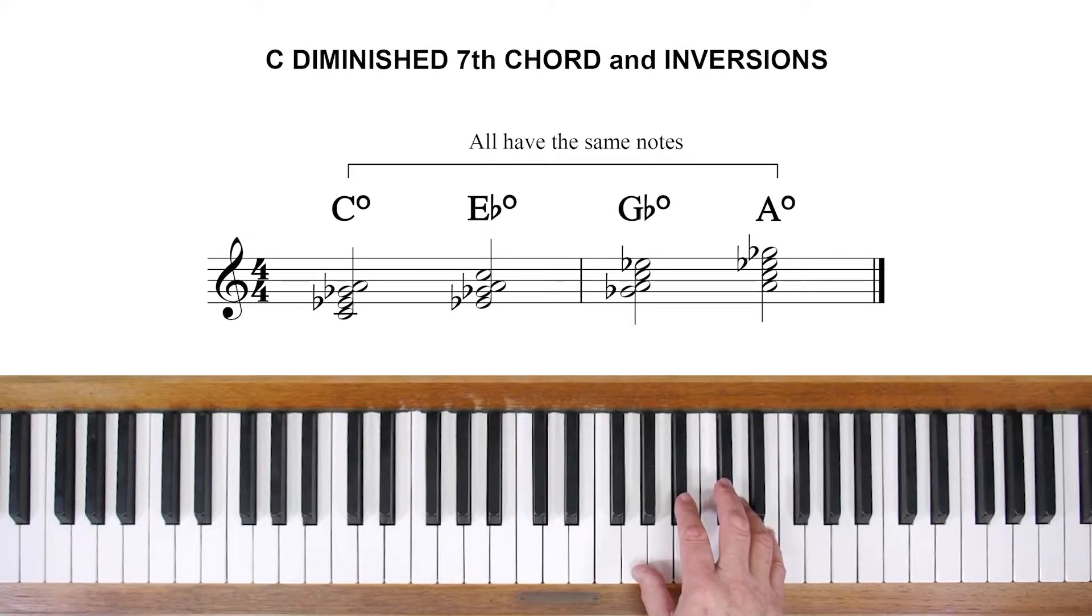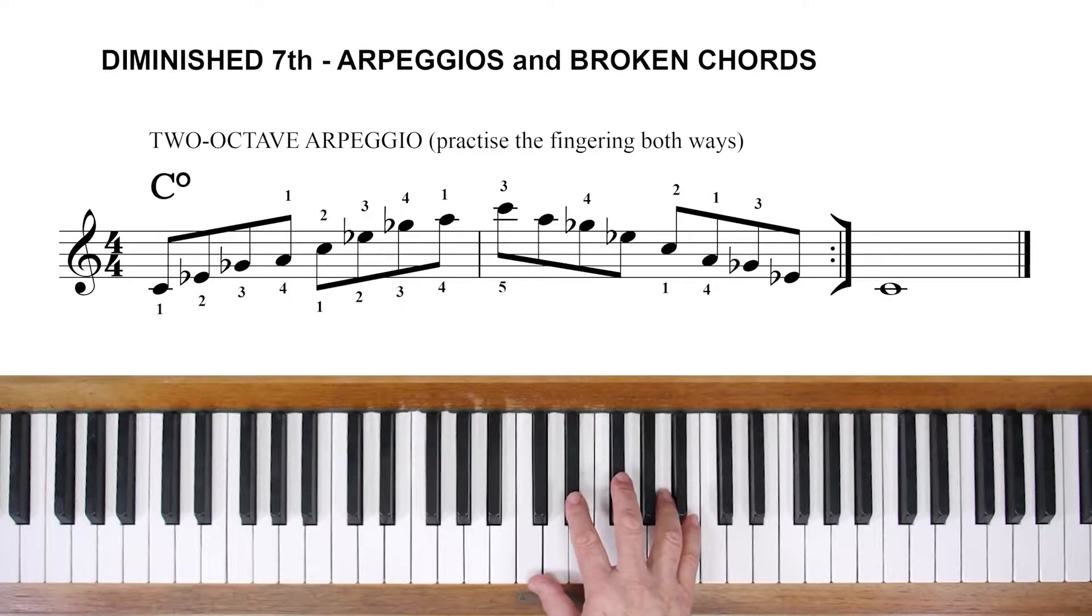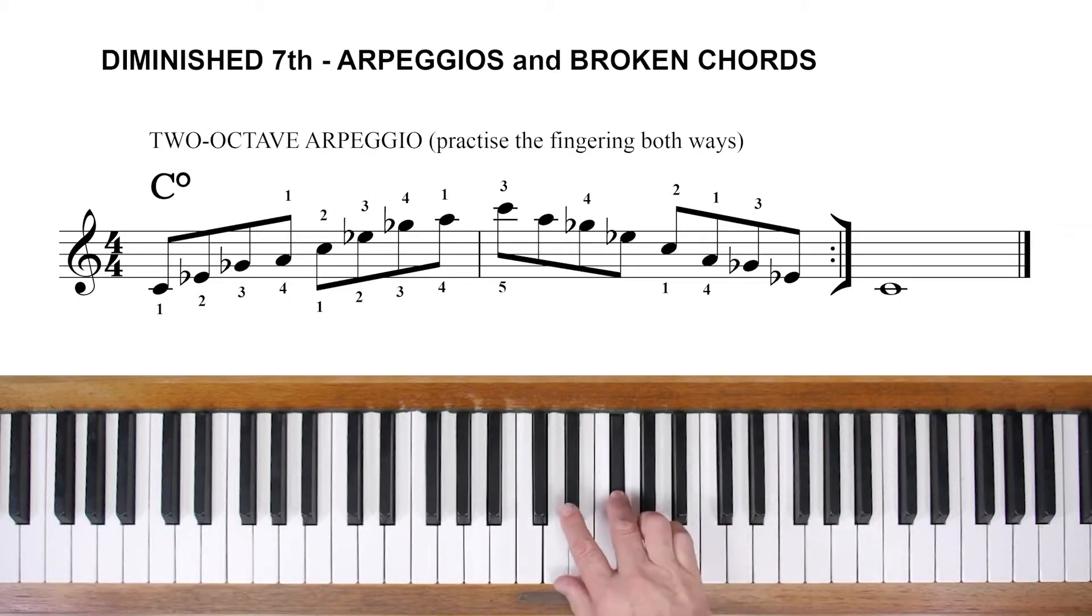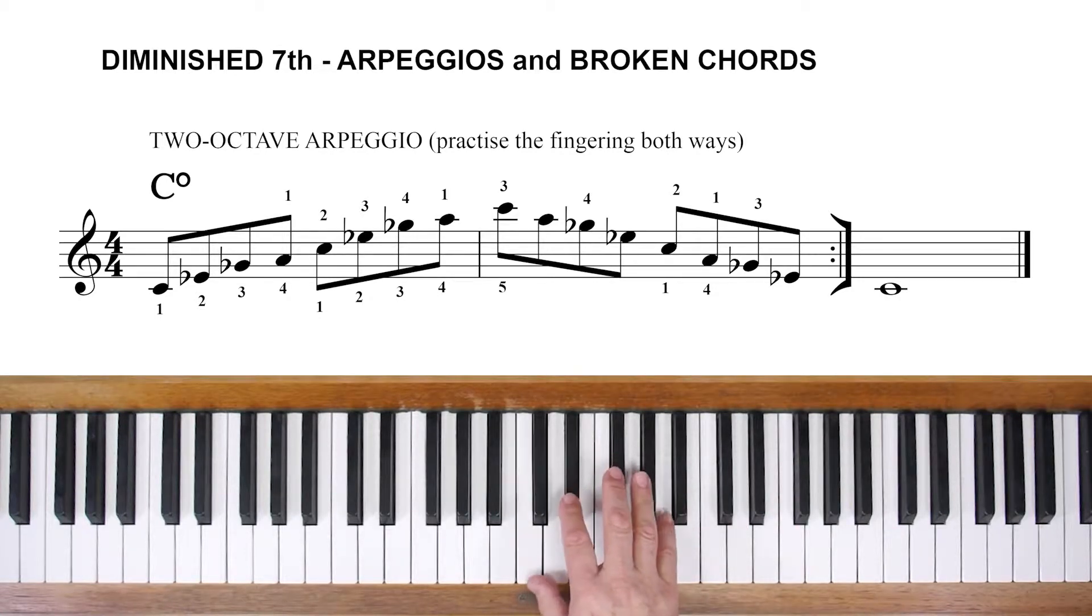Begin by familiarizing yourself with these chords and their inversions in either hand. Don't forget to work out their arpeggios and broken chords too. Here's an arpeggio of C diminished, and a broken chord.